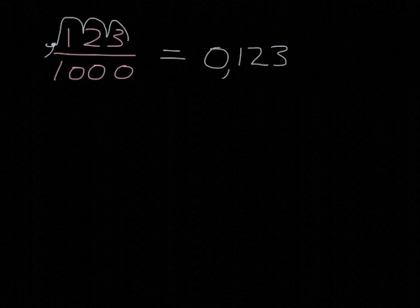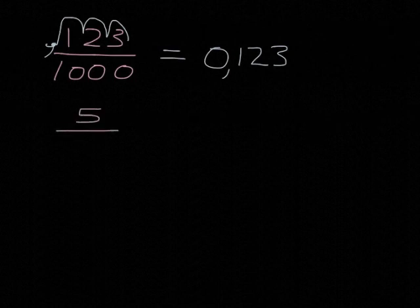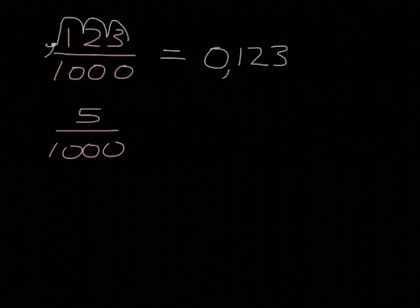Or if we had something like 5 over 1,000, well, we know what that should look like. It should be 0, comma, 0, 0, 5, because we just have a 5 in the thousandth place. But let's see how our little trick would do it.